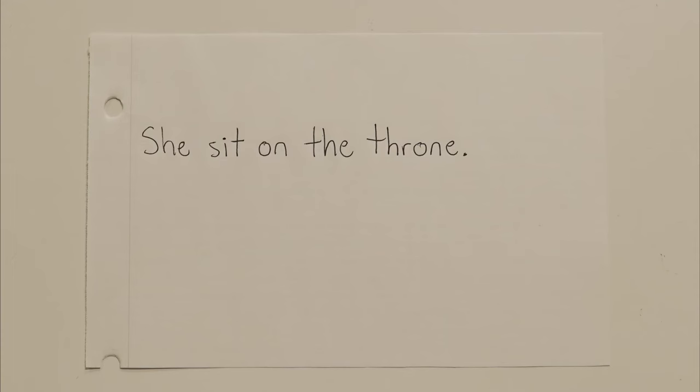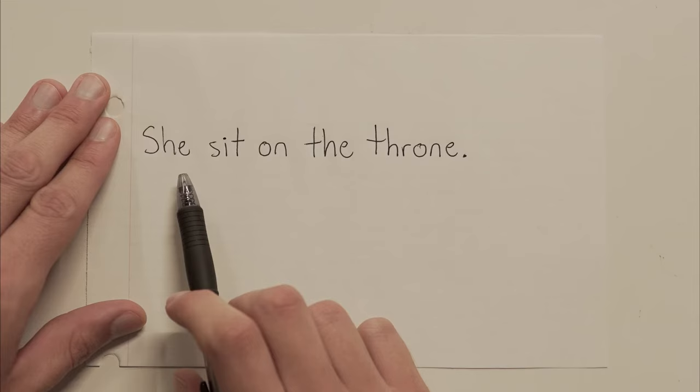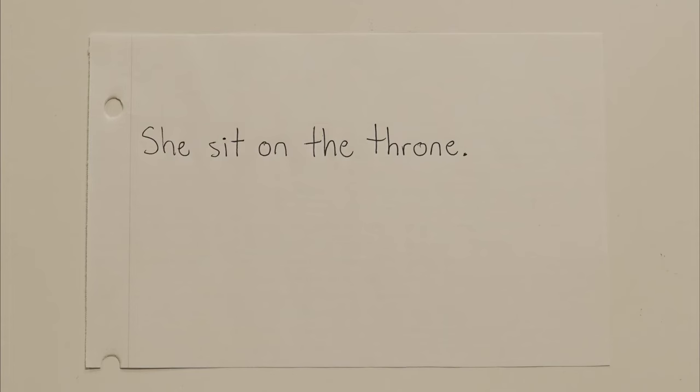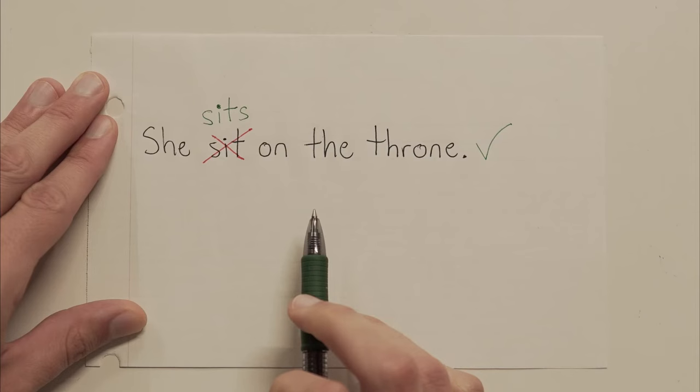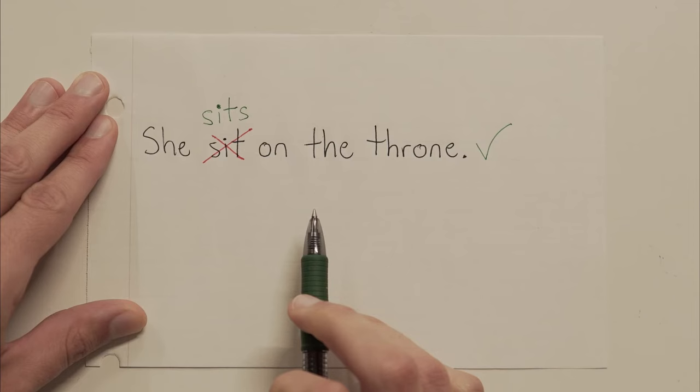Okay, one more easy one, and then we're going to kick it up a notch. She sit on the throne. Subject is she. Verb is sit. But she is one person. And you wouldn't say one person sit on the throne. You would say one person sits on the throne. So she sits.